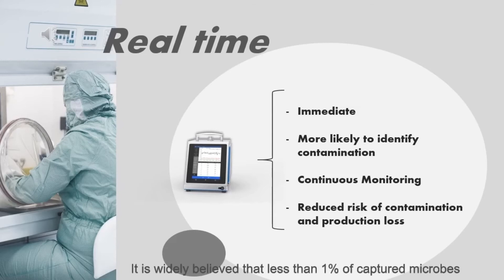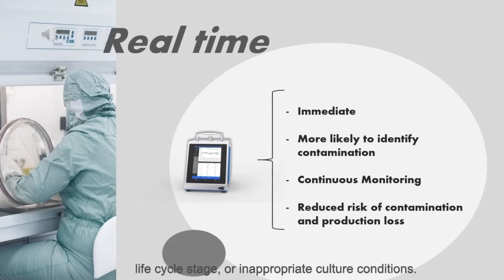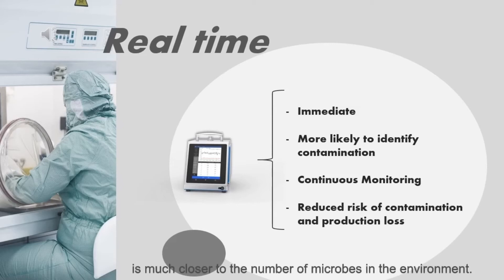It is widely believed that less than 1% of captured microbes can be grown on media because of mechanical damage, life-cycle stage, or inappropriate culture conditions. Therefore, the number of microbes that BAMS detects is much closer to the actual number of microbes in the environment.